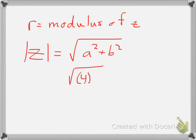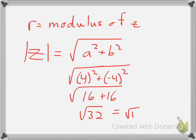So 4 squared plus negative 4 squared gives me 16 plus 16. The square root of 32, I will break down to 16 and 2. So 4 square root of 2 is my value for r.